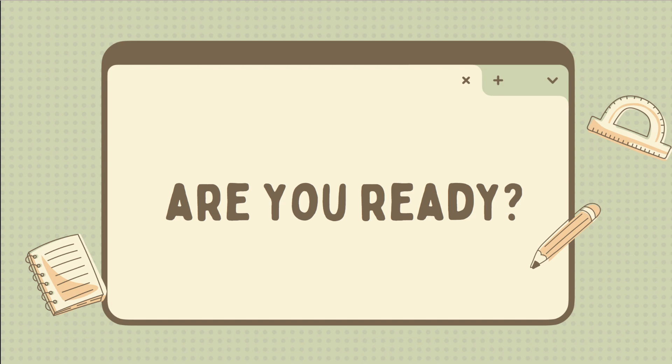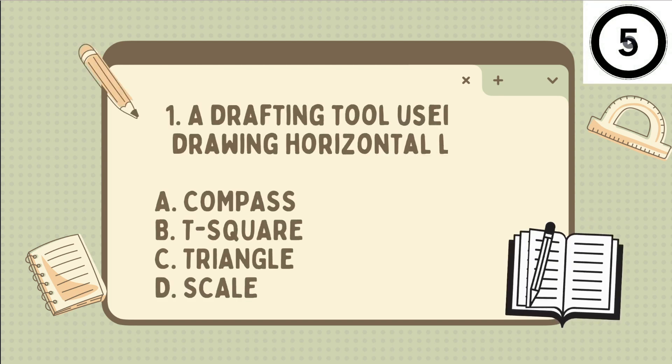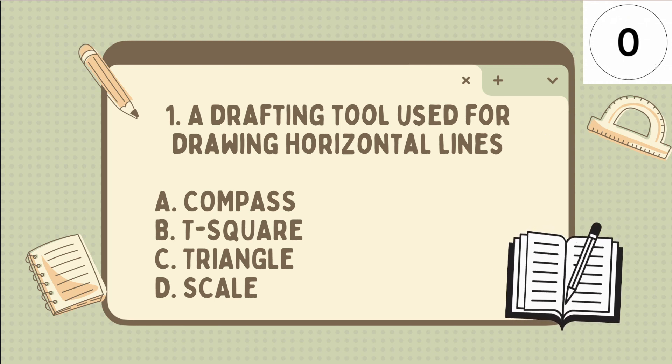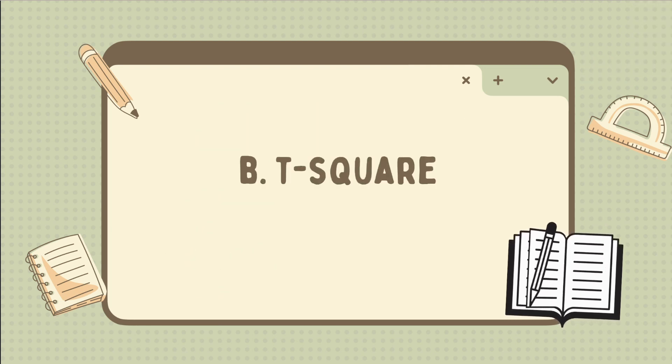Choose the letter of your answer. Let's have first question. A drafting tool used for drawing horizontal lines. A. Compass. B. T-square. C. Triangle. D. Scale. Now, what's your answer? Very good. It's letter B. T-square.